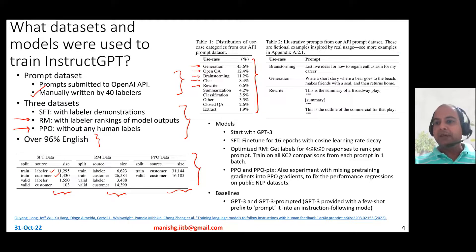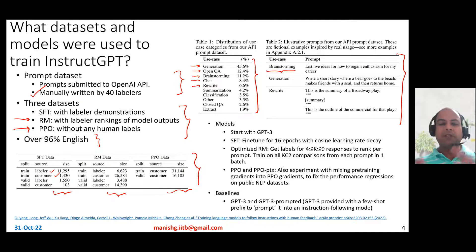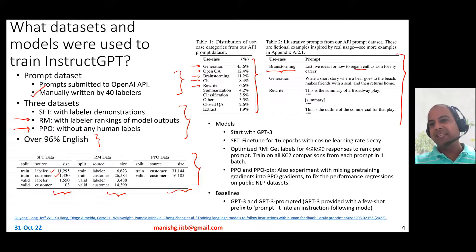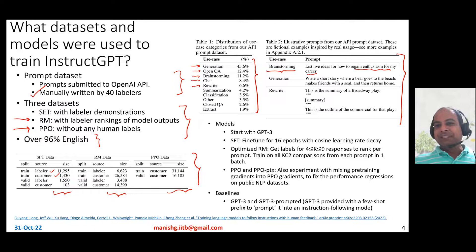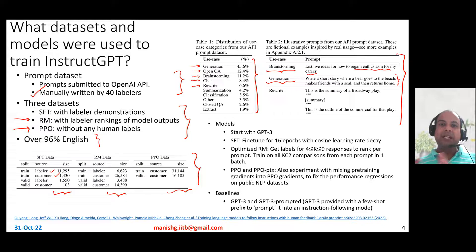Here are a few examples of those prompts. A brainstorming prompt is more of an open question kind of prompt — for example, 'List five ideas for how to regain enthusiasm for my career.' Generation-based prompts are more like 'Write a short story on some kind of situation.'